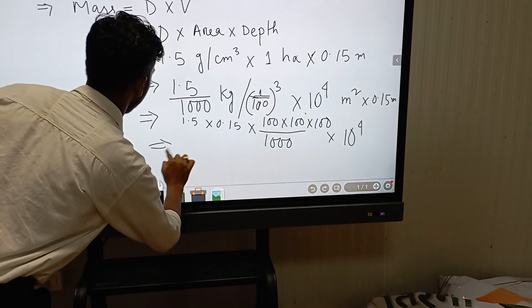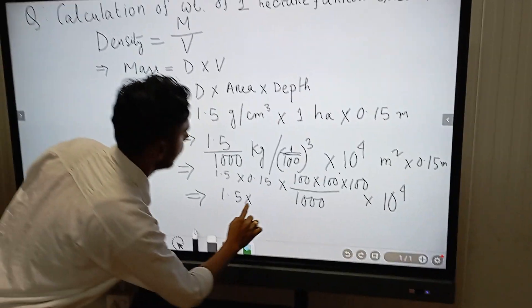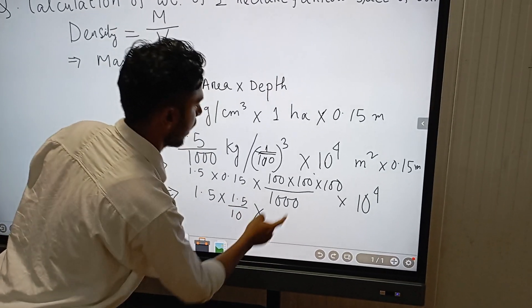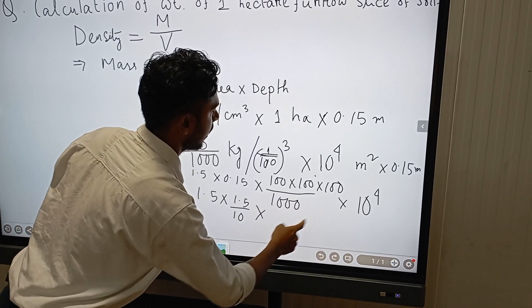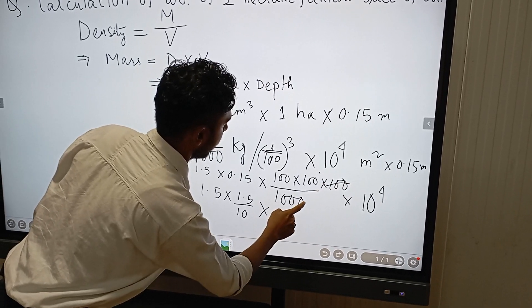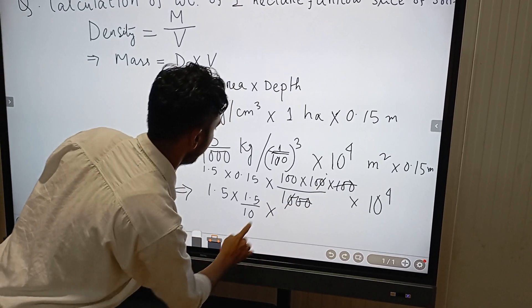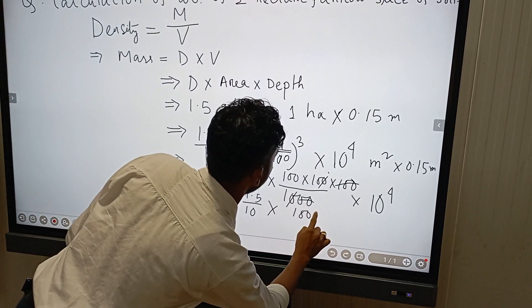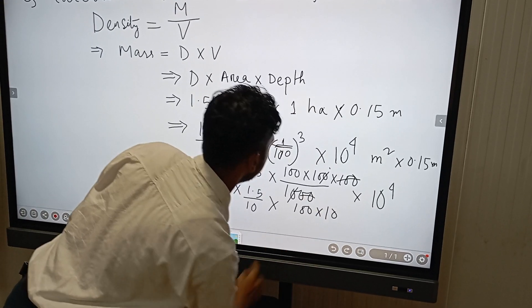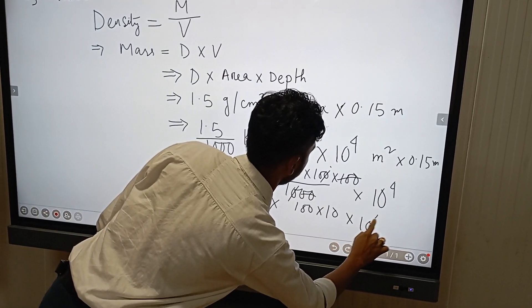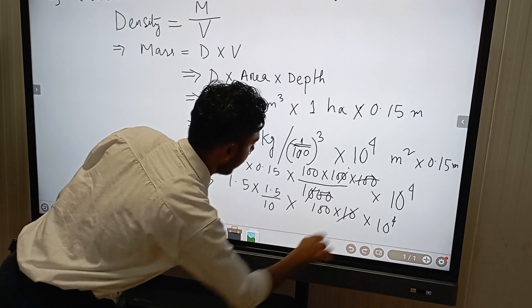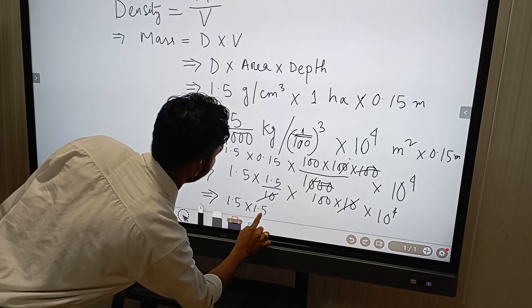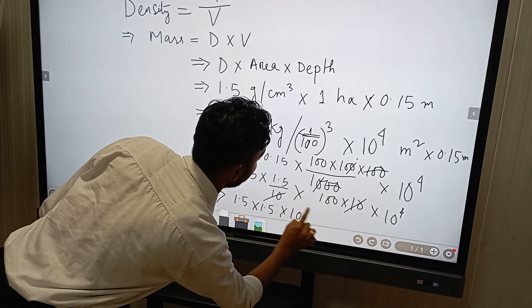So coming to 1.5 times 1.5 divided by 10, and we can nullify these things - 100 to 0. So 100 times 10 is there, times 10 to the power 4. So again nullify 10 and 10. So it should be 1.5 times 1.5 times 10 to the power 6.